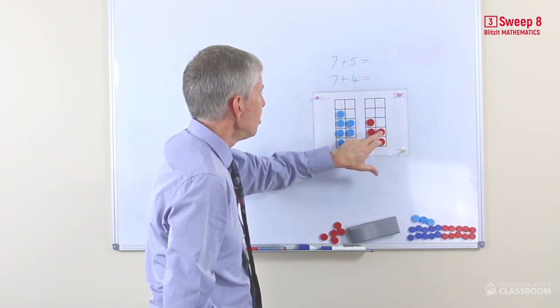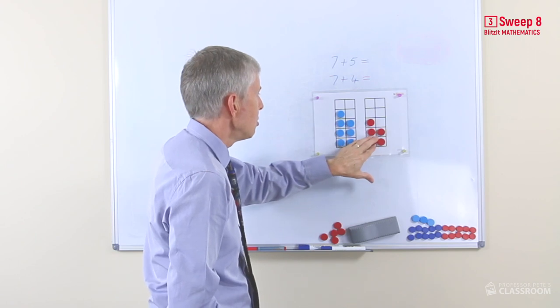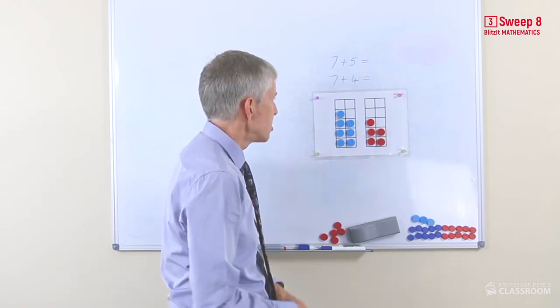So this time the three will be these three red ones here that we'll move up to there. Again, we'll have two left in the ones column, as it were, showing the answer is 12.